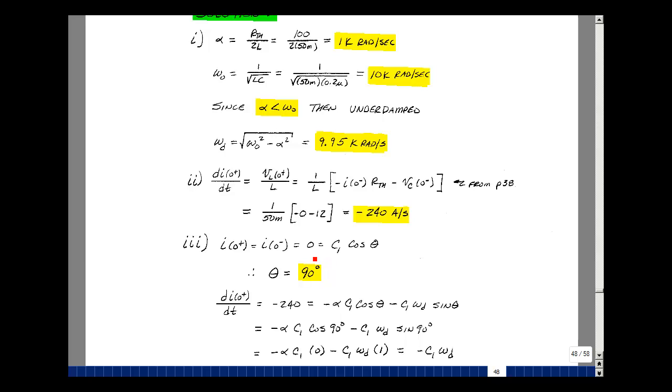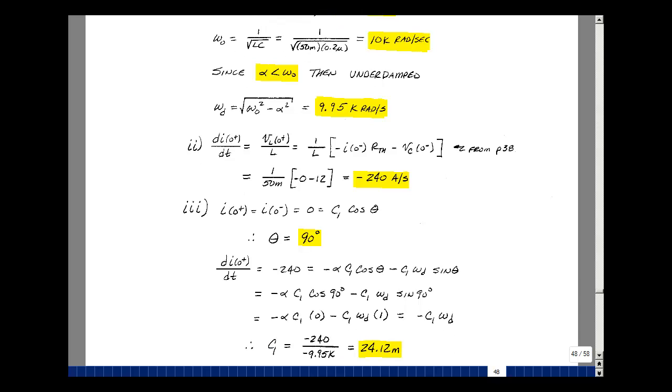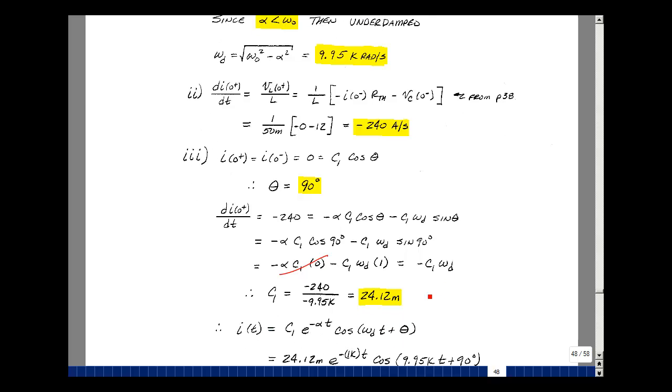Let's take our first equation and set it equal to 0. So the cosine of theta times c1 has to equal 0, and the cosine is equal to 0 at 90 degrees. So we've got the value of theta. And di/dt at 0 plus was equal to minus 240 amps per second, and then that was equal to the equation we differentiated. We now know that if theta is equal to 90 degrees, we can put that in, and the cosine of 90 is 0, so we can get rid of this term. The sine of 90 is equal to 1, so we get minus c1 times omega_d. Solve for c1. So we've got the minus 240 here. We're going to divide by minus omega_d, which is 9.95k with the minus sign. They cancel. I get 24.12 times 10 to the minus 3.